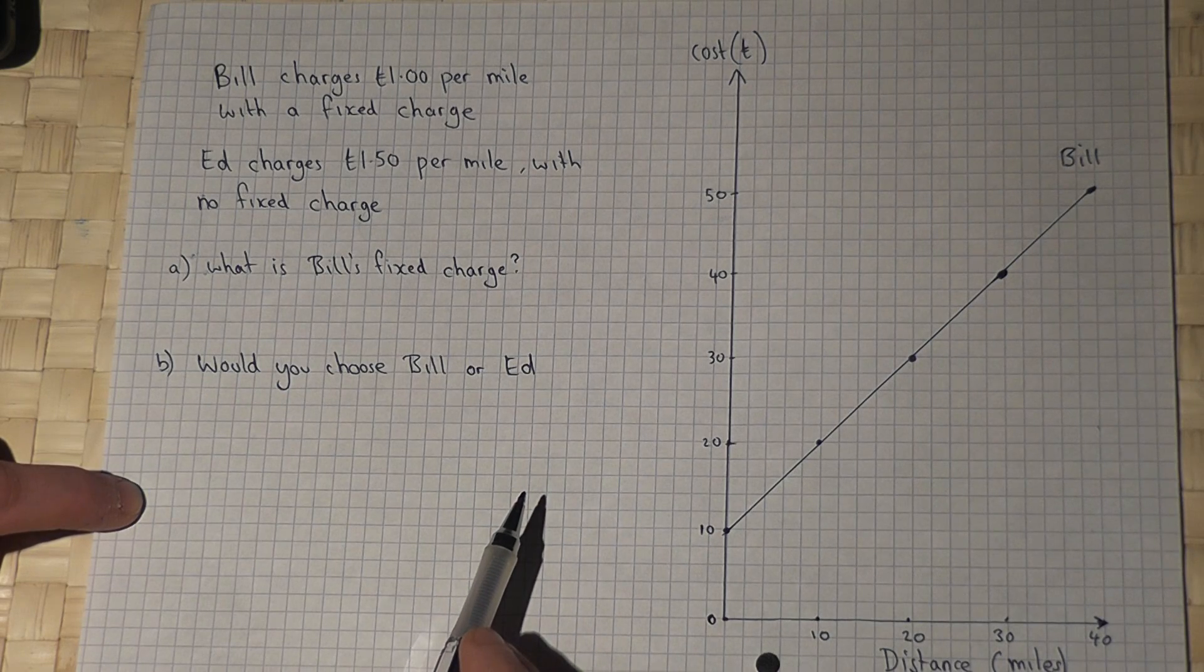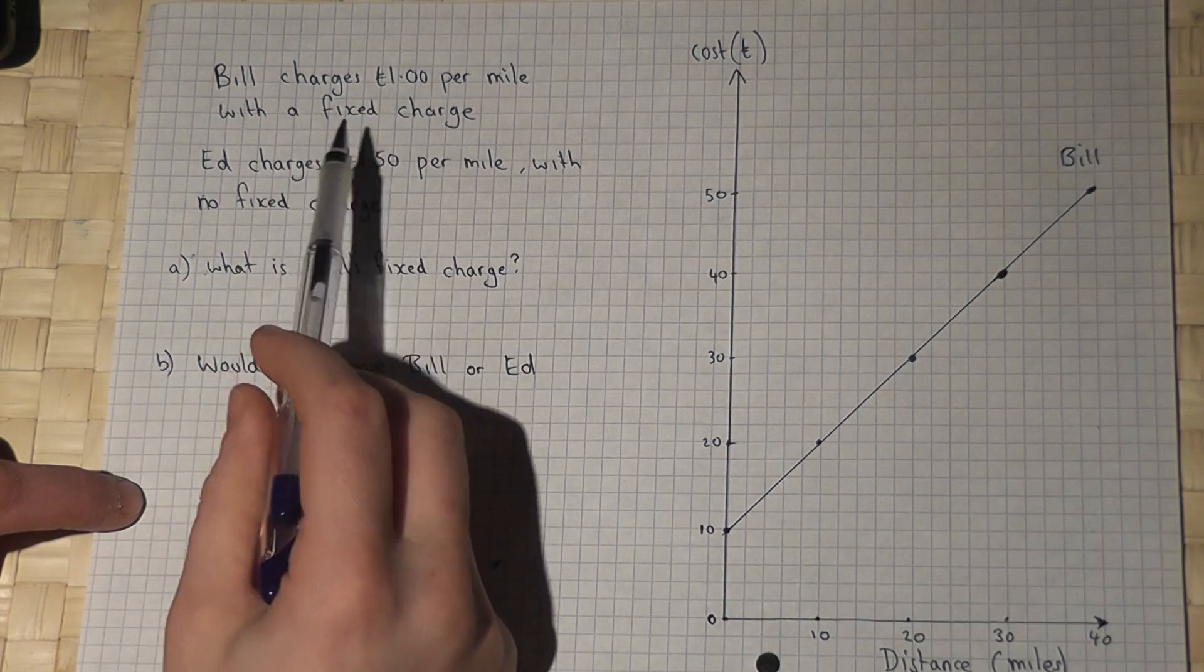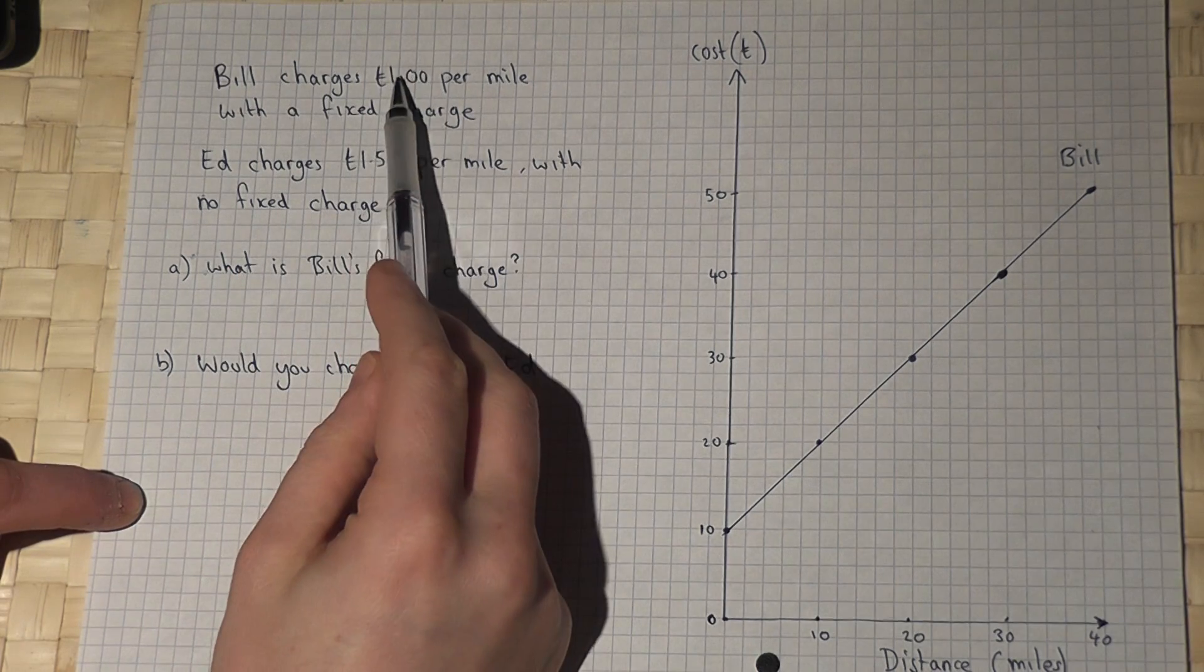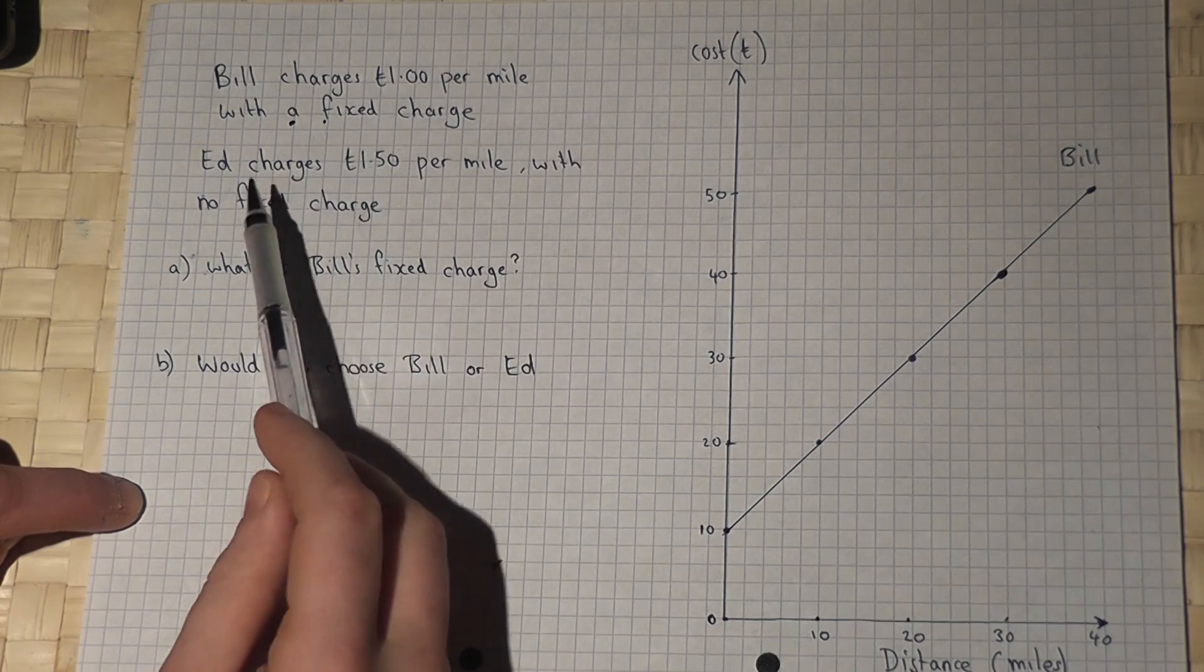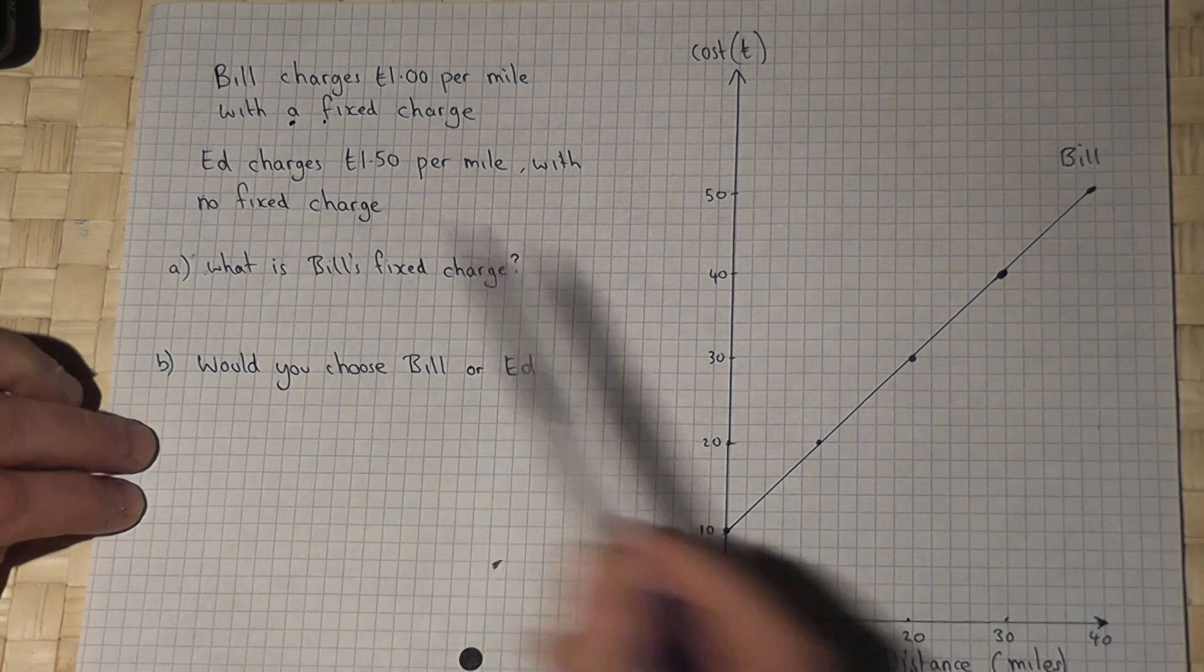In this problem, we're told that Bill, who delivers parcels, charges £1 per mile with a fixed charge. Ed charges £1.50 per mile with no fixed charge.